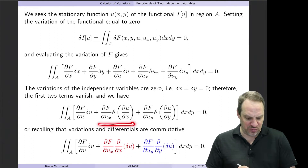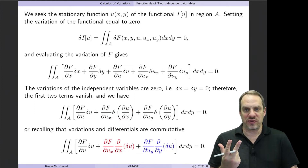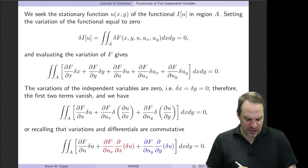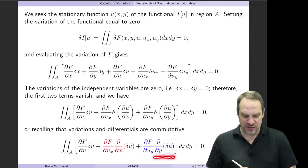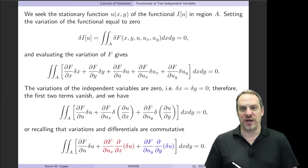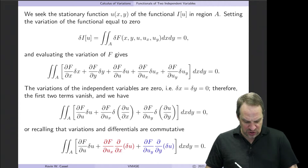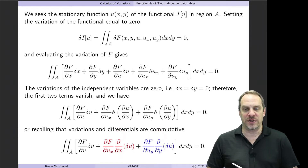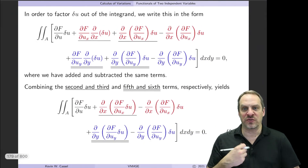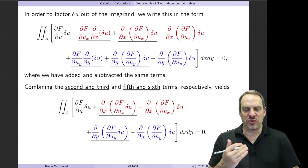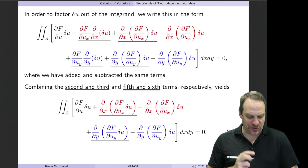The variation of the derivative of u and the derivative commute as long as u is smooth, so we can rewrite delta u_x as partial partial x of delta u, and delta u_y as partial partial y of delta u. Now this is the stage where we would apply integration by parts to get these derivatives off of the deltas and onto the factors multiplying the deltas — except now we have to do a two-dimensional version of integration by parts.